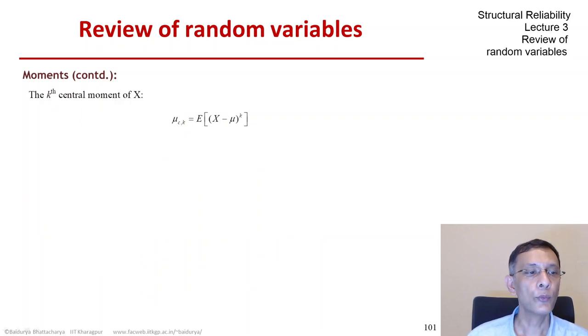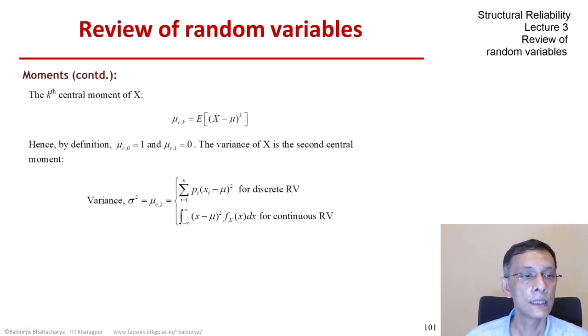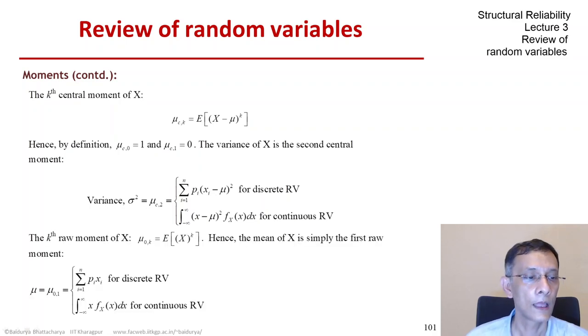So this way, we can define the kth central moment. It's x minus mean whole to the power of k and the expectation of that is the kth central moment. The first central moment is zero. The second central moment is the variance.